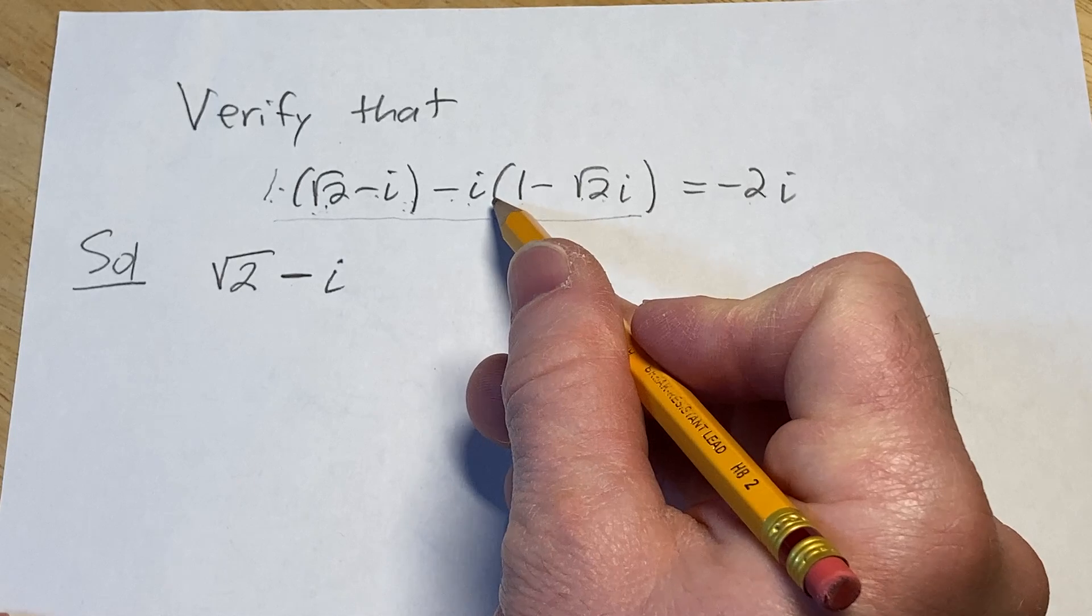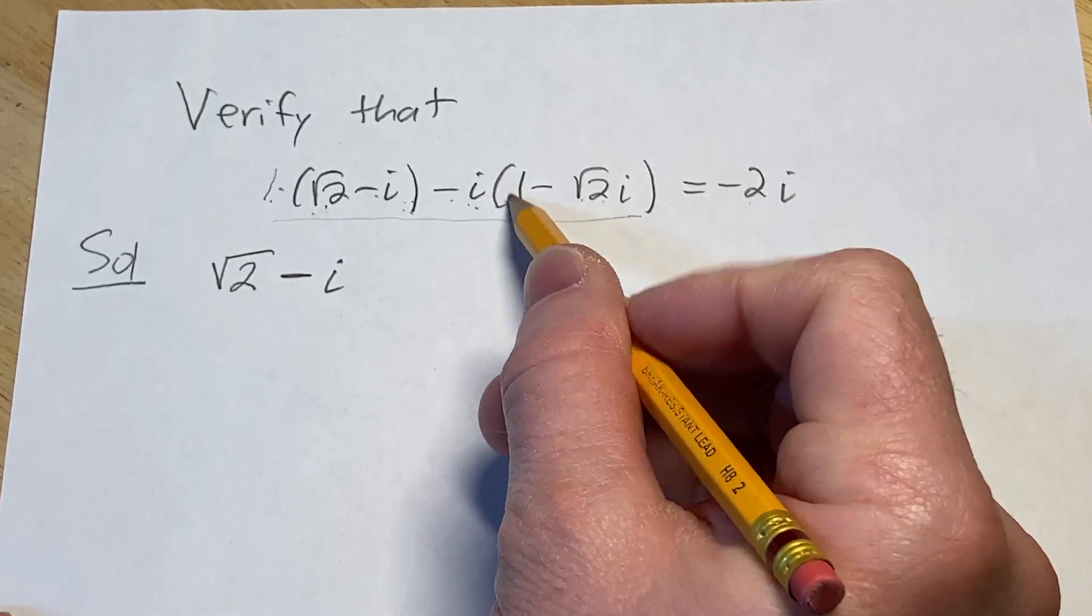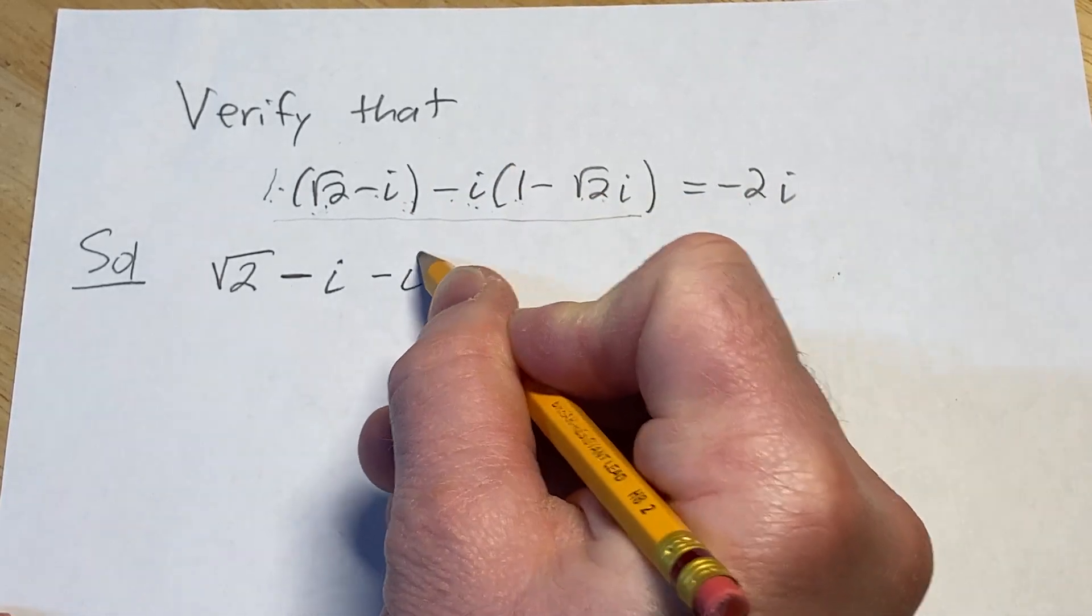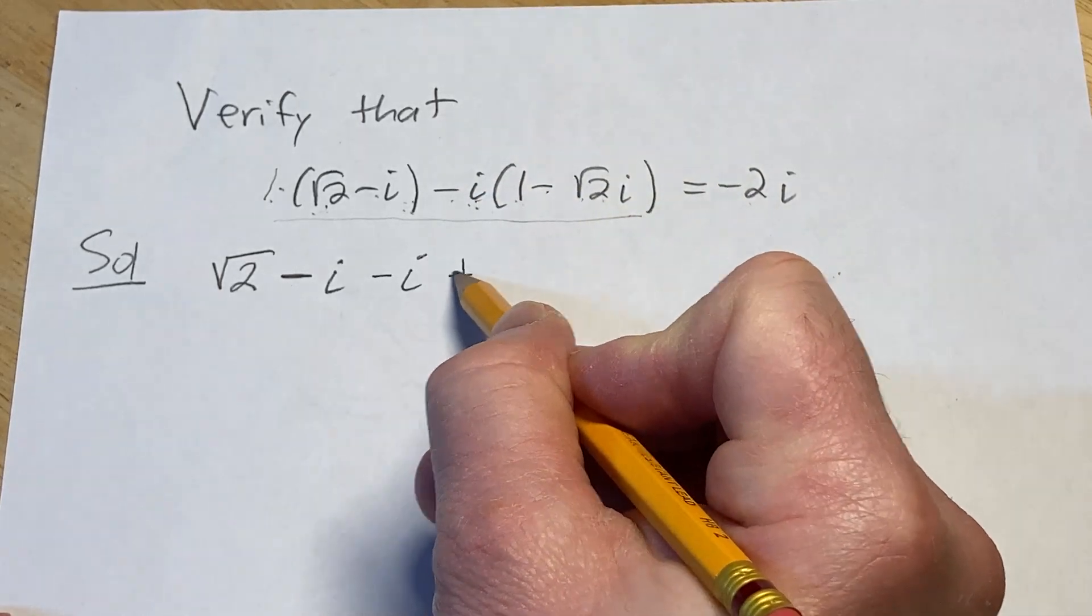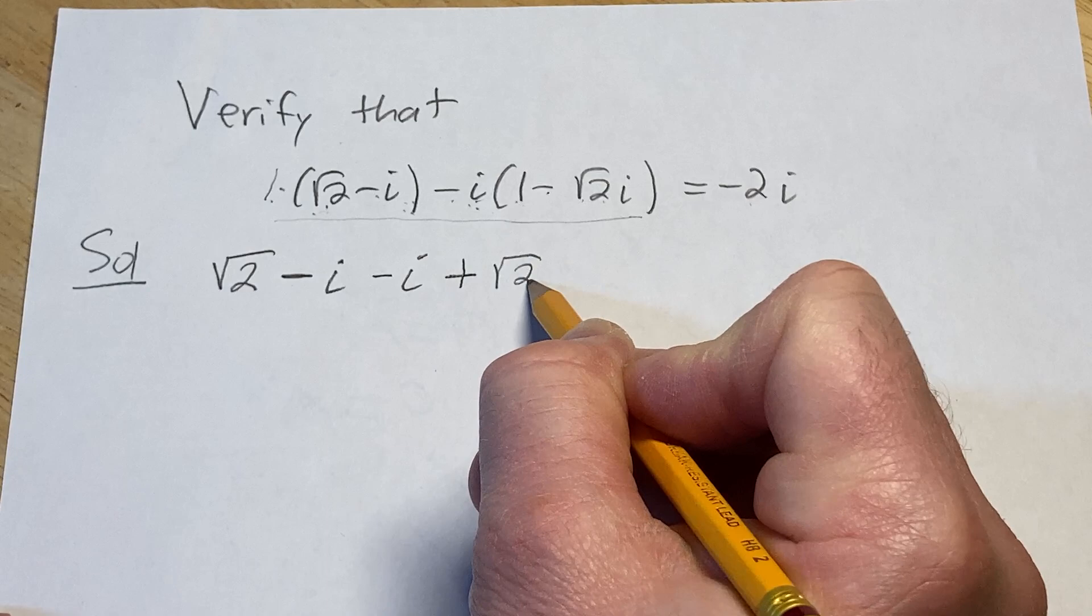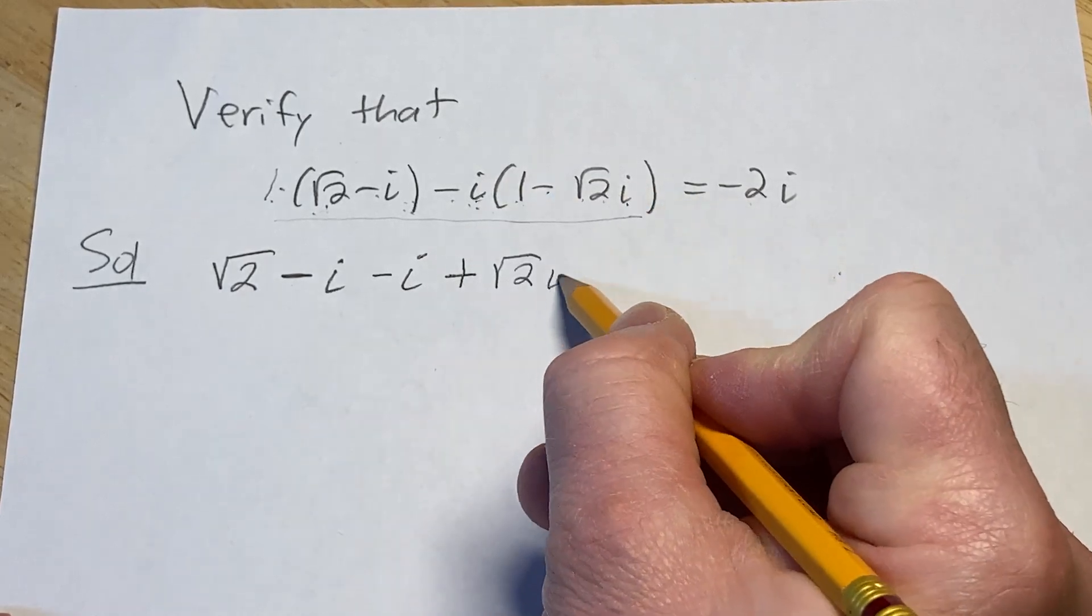Then here we can distribute this minus i. Minus i times 1 is minus i and then minus and minus is plus so we're going to get plus square root of 2 and then i times i is i squared.